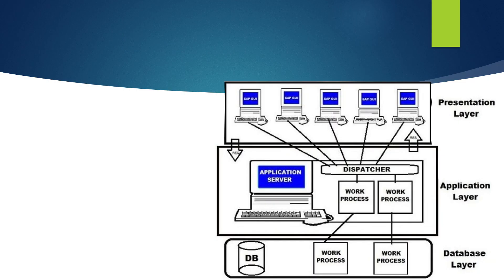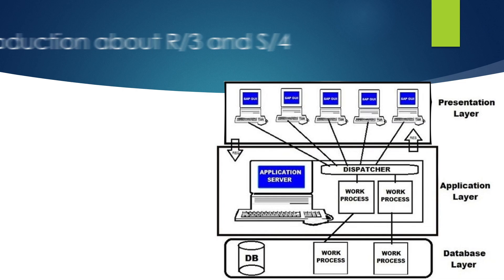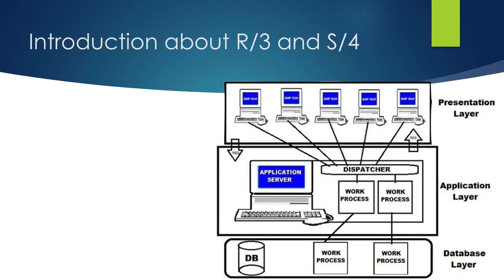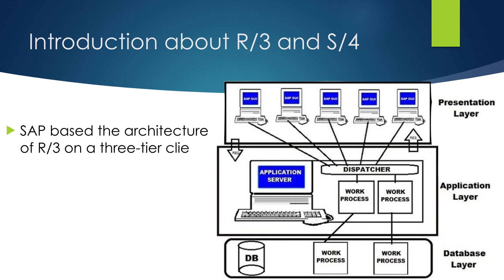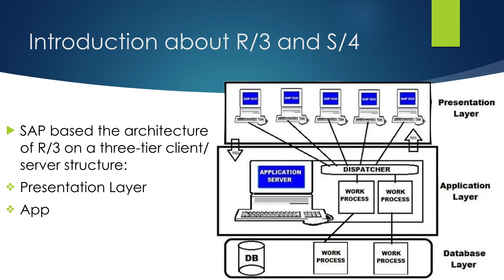We are going to see about what is R/3 Architecture and S/4 Architecture. SAP based the architecture of R/3 on a three-tier client-server structure. The first tier is the Presentation Layer, the second is the Application Layer, and the third is the Database Layer.